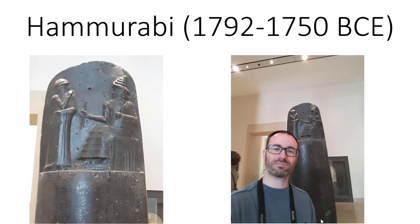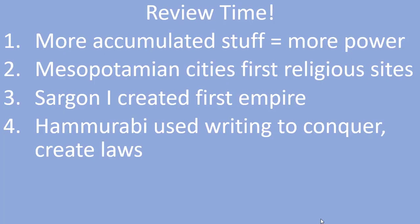To review the main points of political developments in Mesopotamia: more settled people can accumulate more stuff, and those who obtain more valuable stuff become more powerful. Many cities in Mesopotamia began as religious sites managed by priests, and it wasn't until around 2,900 BCE that we see political leaders separate from the priests. Sargon I was the first in the West to create an empire by installing chosen leaders of conquered cities. Finally, Hammurabi used writing to weaken cities around him and devised a law code that united his empire under one legal code.